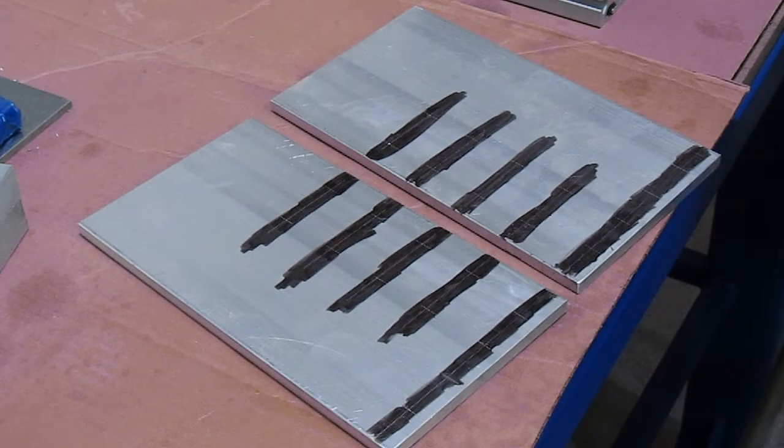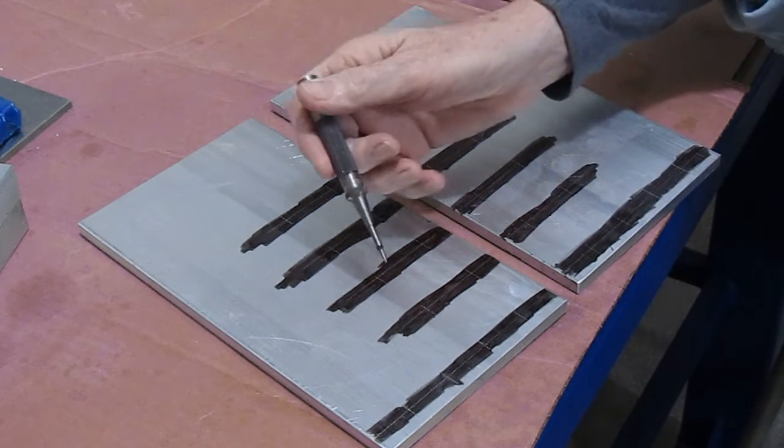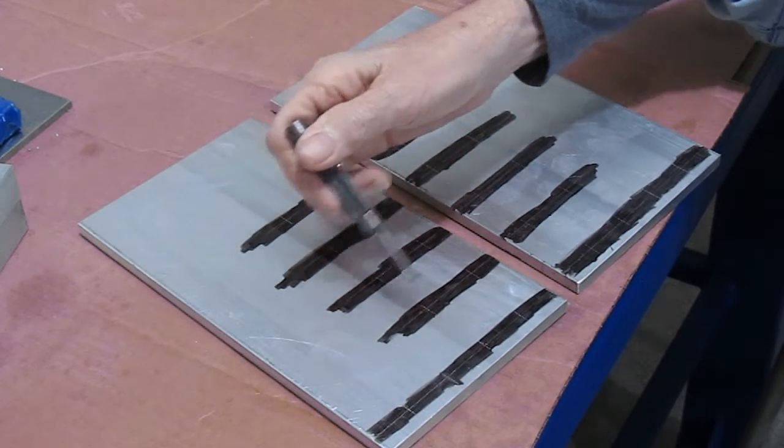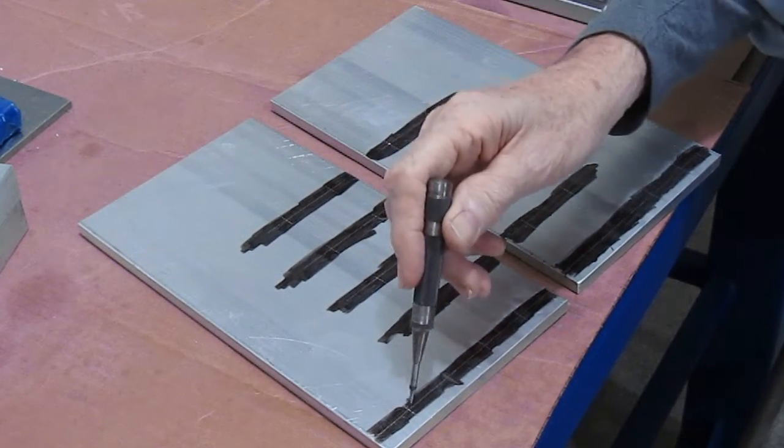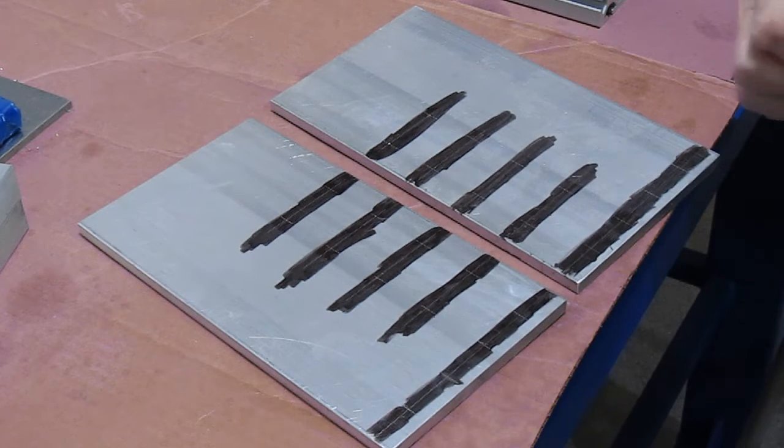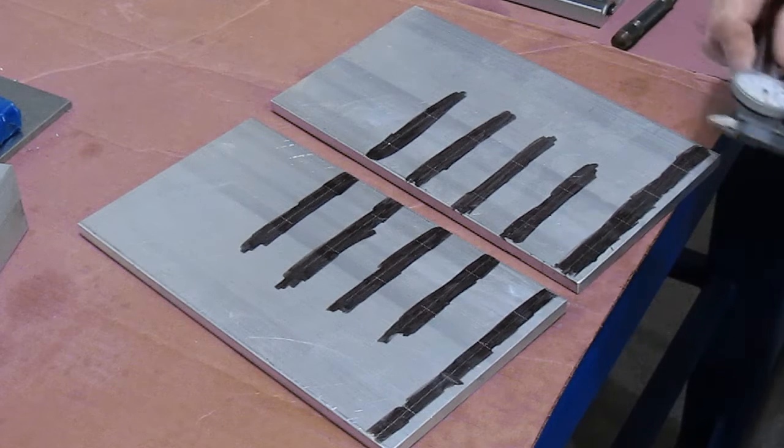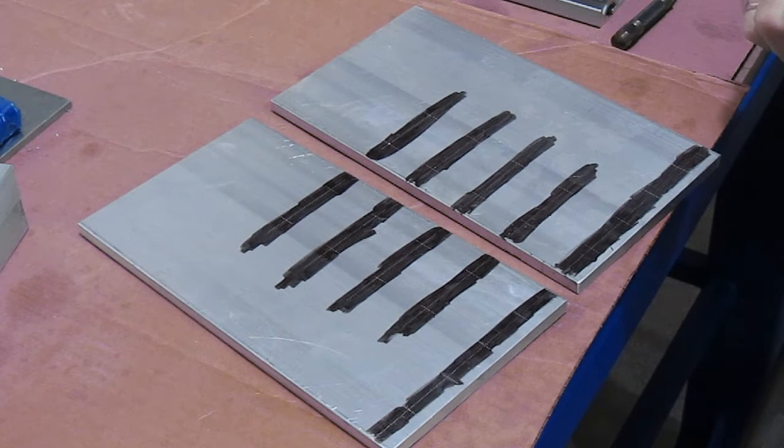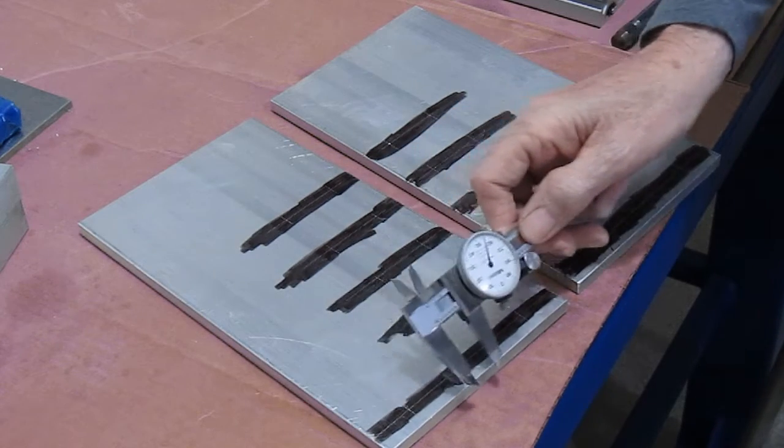Here we have the riser plates that have been marked with black Sharpie and scribed for the appropriate hole locations. How I did my scribing was I just used my caliper, set it to the appropriate distance, and made my scratch marks.